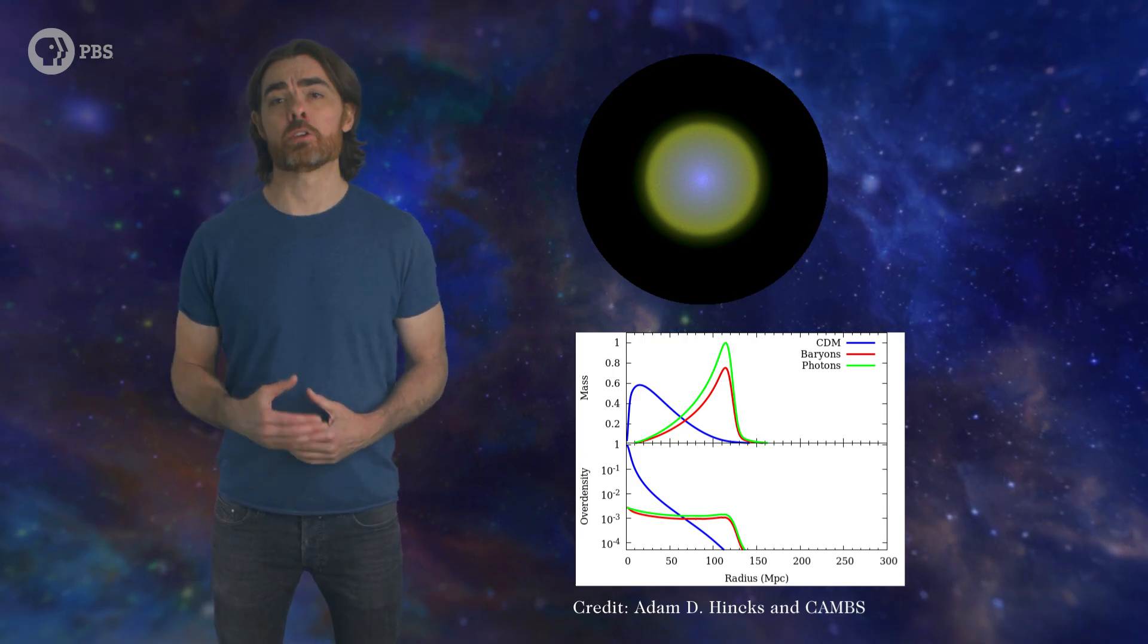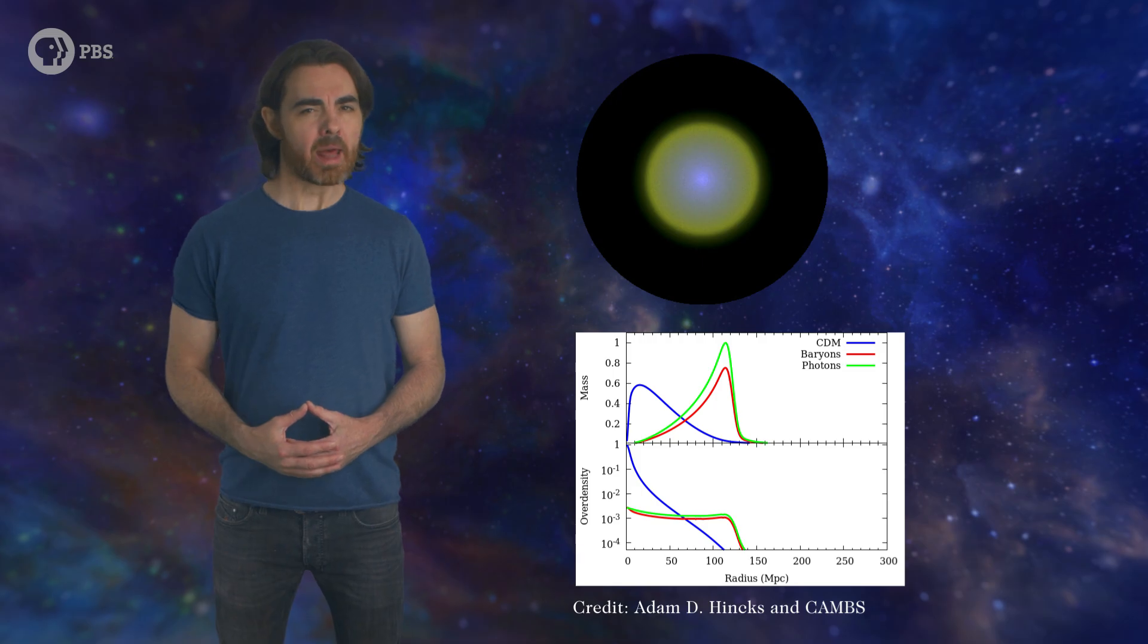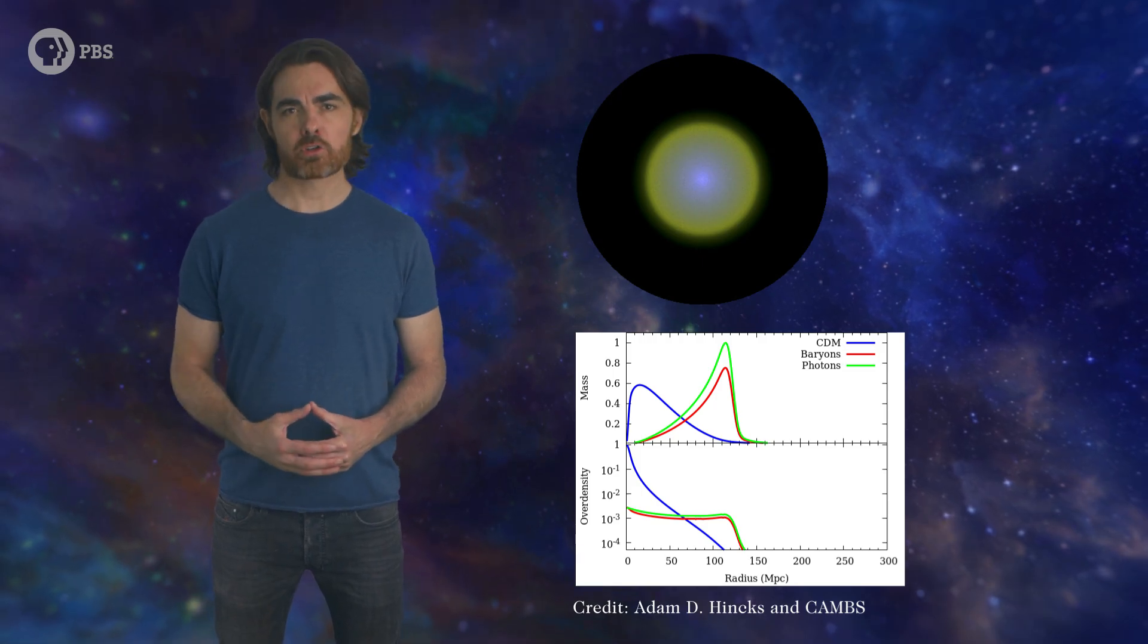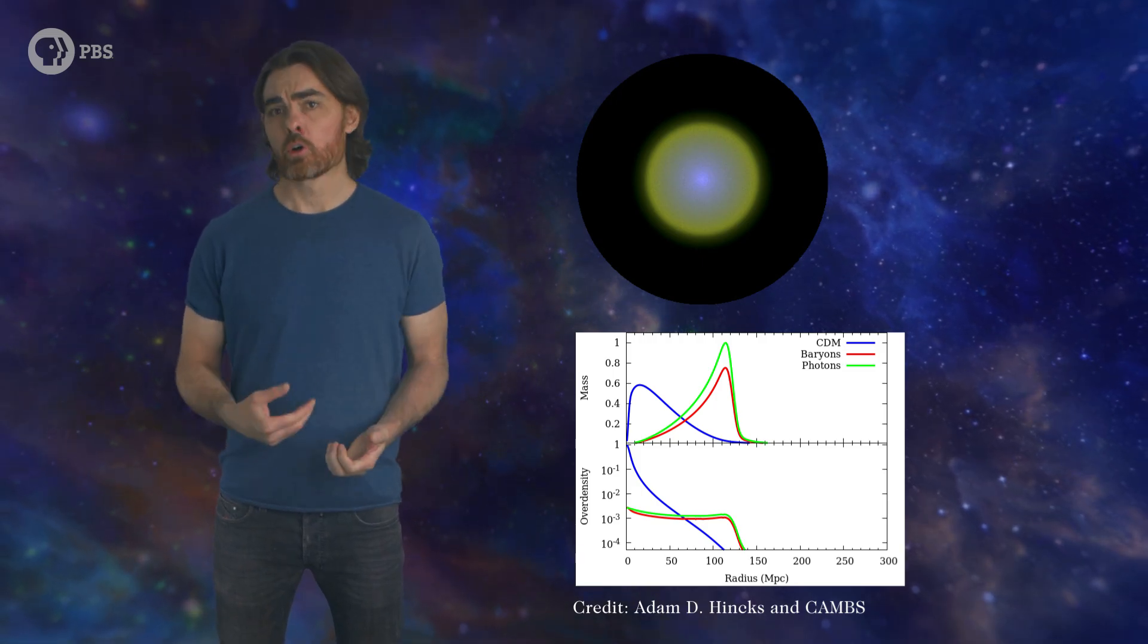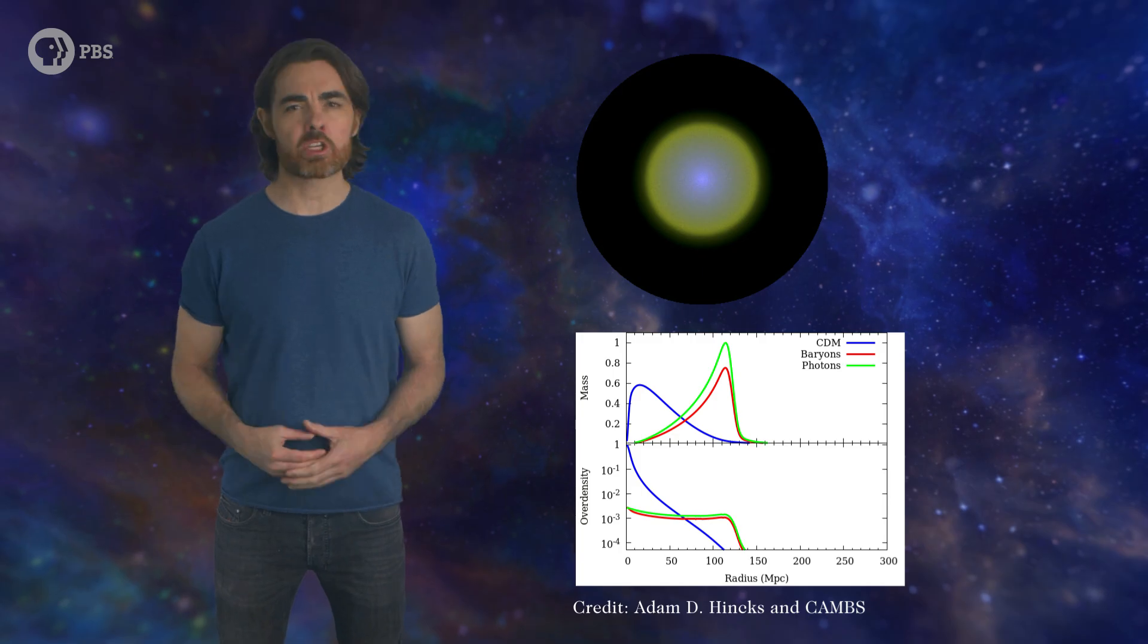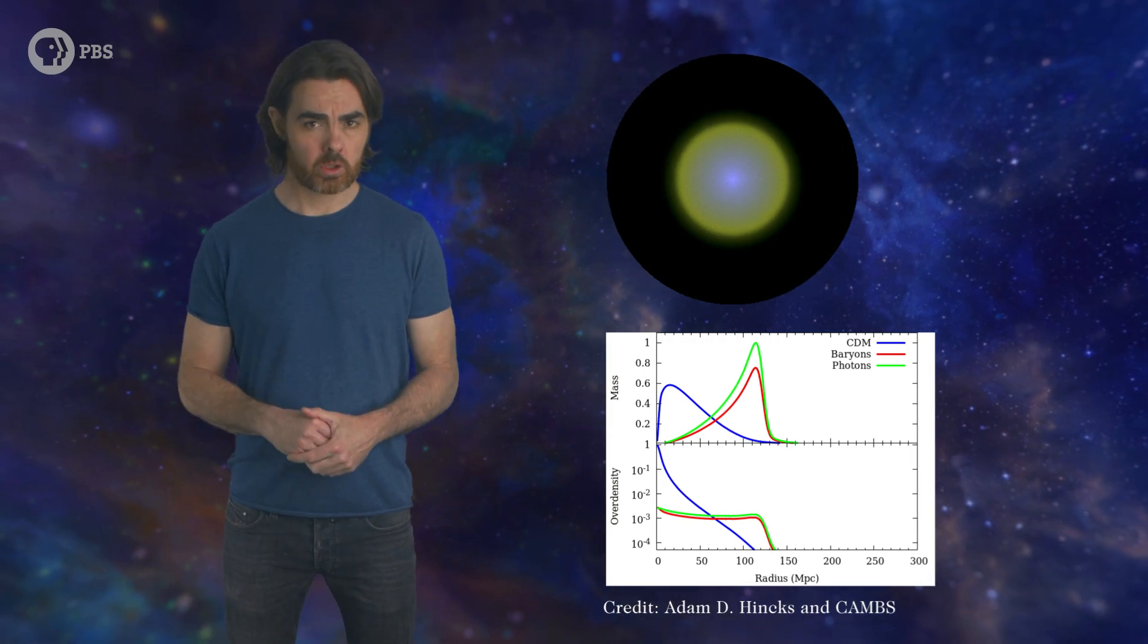But as it expanded, so did the universe. As matter became more diffuse and the photons themselves were stretched, redshifted to lower energies, the universe cooled. At 380,000 years, the plasma hit a critical temperature of 3,000 Kelvin, around the surface temperature of the coolest red dwarf stars.